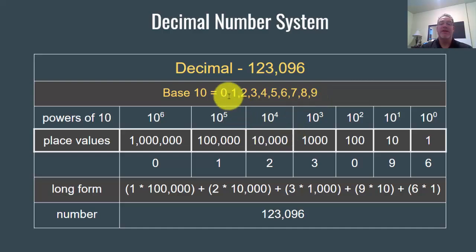So if we want to write the number 123,096, we put 1 in the hundred thousands place. That means we have 1 hundred thousand. We put 2 in the ten thousands place, that means we have 2 ten thousands, 3 in the thousands place means we have 3 one thousands. We also put 9 in the tens place, means we have 9 tens and 6 ones.